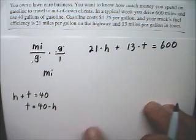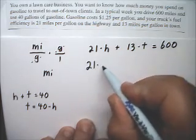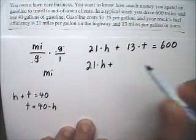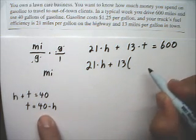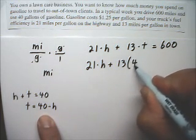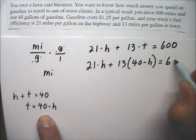Instead of T there, it has 40 minus H. So, 21 times H plus 13, and instead of T, it's going to be 40 minus H equals 600.